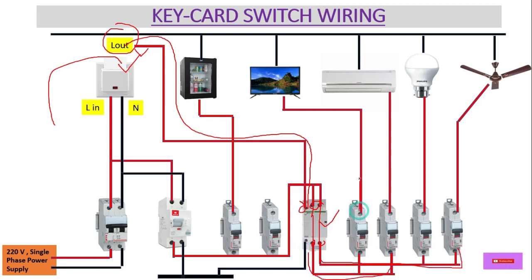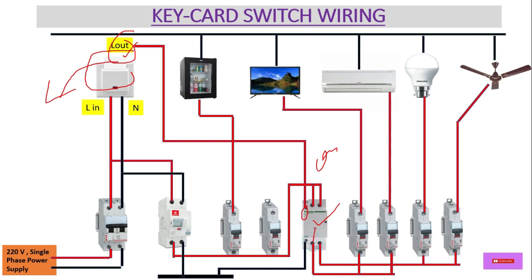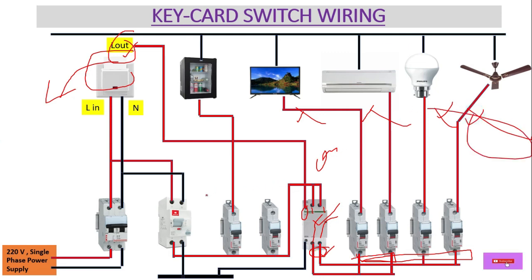With the contactor energized, power is fed to individual appliances like the fan, lights, AC, and television. When we again remove the card, power is lost at L-OUT, the contactor coil loses supply at A1, the contactor de-energizes, the circuit breaks, and it becomes NO again — no power at the output, so all MCBs lose power and all loads are turned off automatically. This is how the key card switch system works.